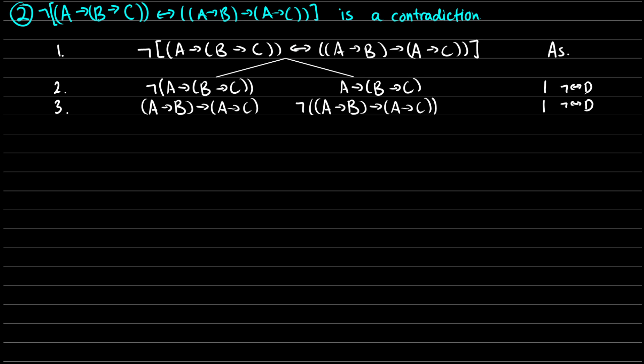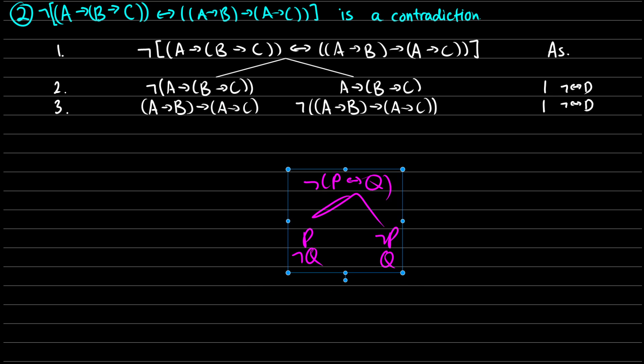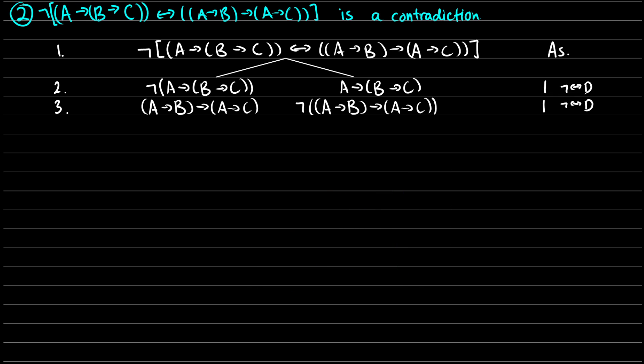Not (A → B → C) if and only if (A → B) → (A → C). We want to show it's a contradiction, so we just take the wff and start the tree. I also did the first step, which is not-biconditional decomposition, because these are quite long wffs. So basically, if you have not (P ↔ Q), this means you have two possibilities: either P is true and Q is false, or P is false and Q is true — our values differ. On the left case we take not on the first one, and on the right case we take not on the second one.